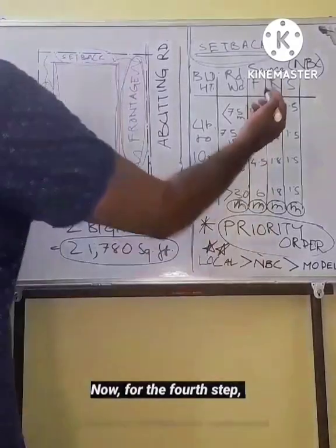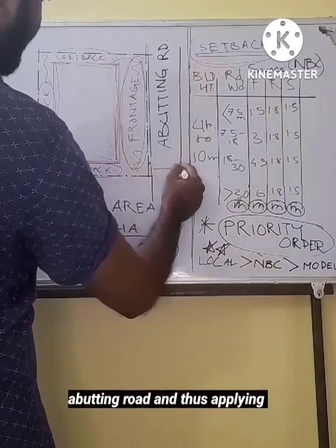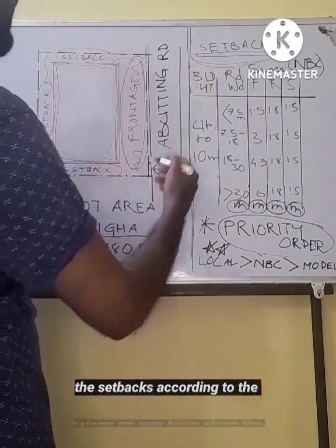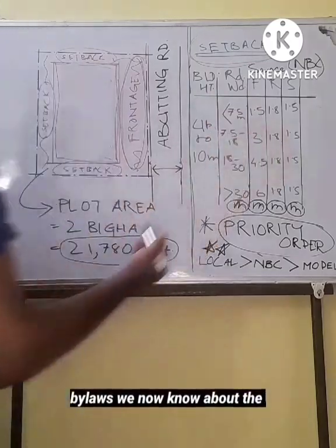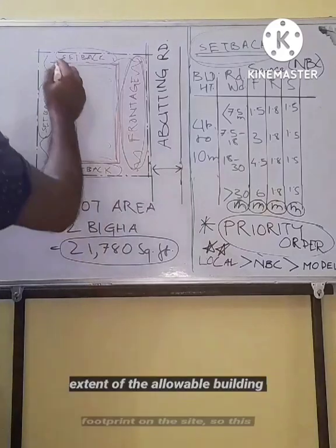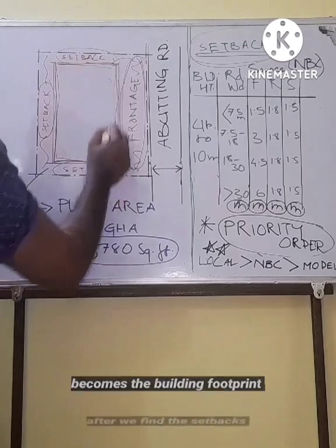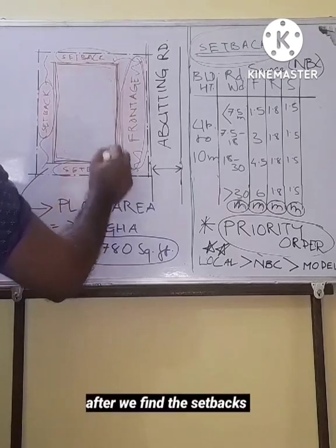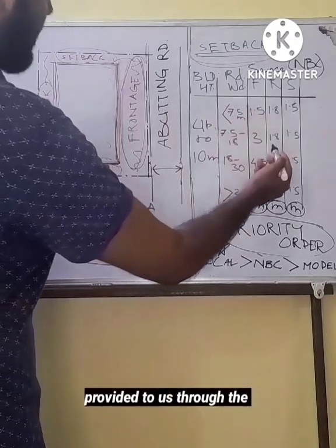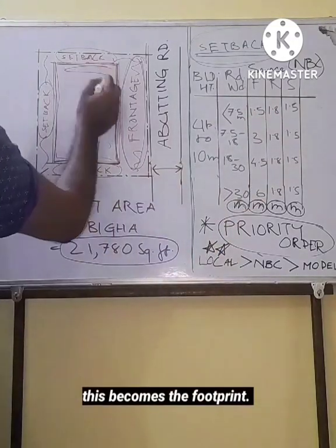Now for the fourth step, after finding out the width of the abutting road and applying the setbacks according to the bylaws, we now know about the extent of the allowable building footprint on the site. So this becomes the building footprint after we find the setbacks provided to us through the local municipal bylaws.